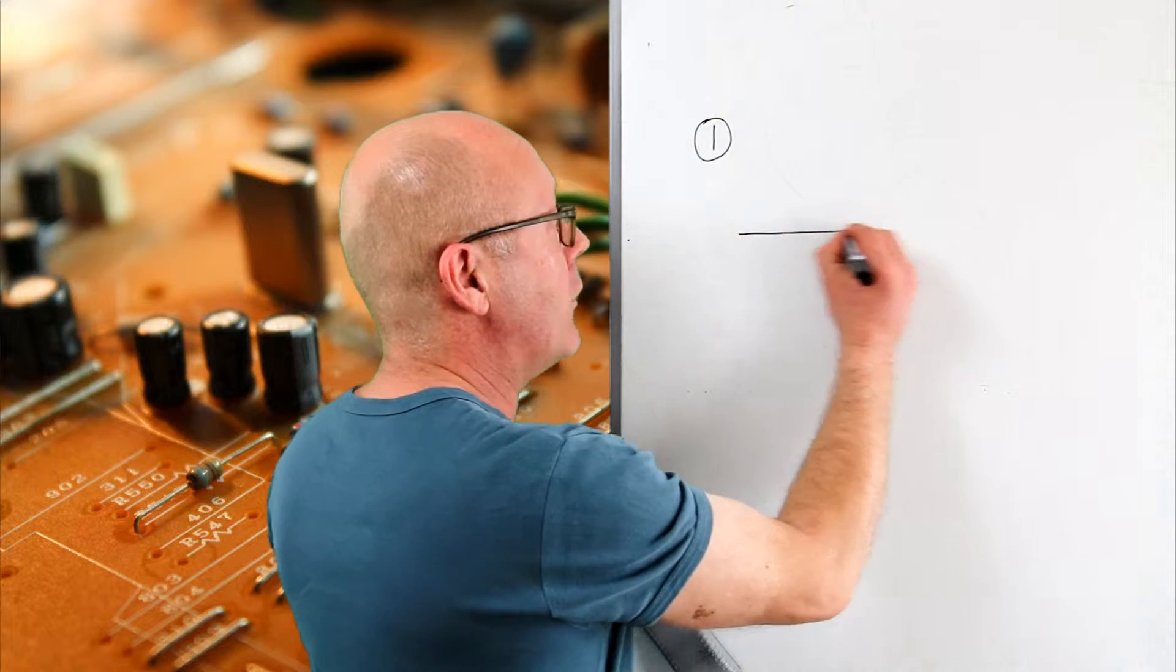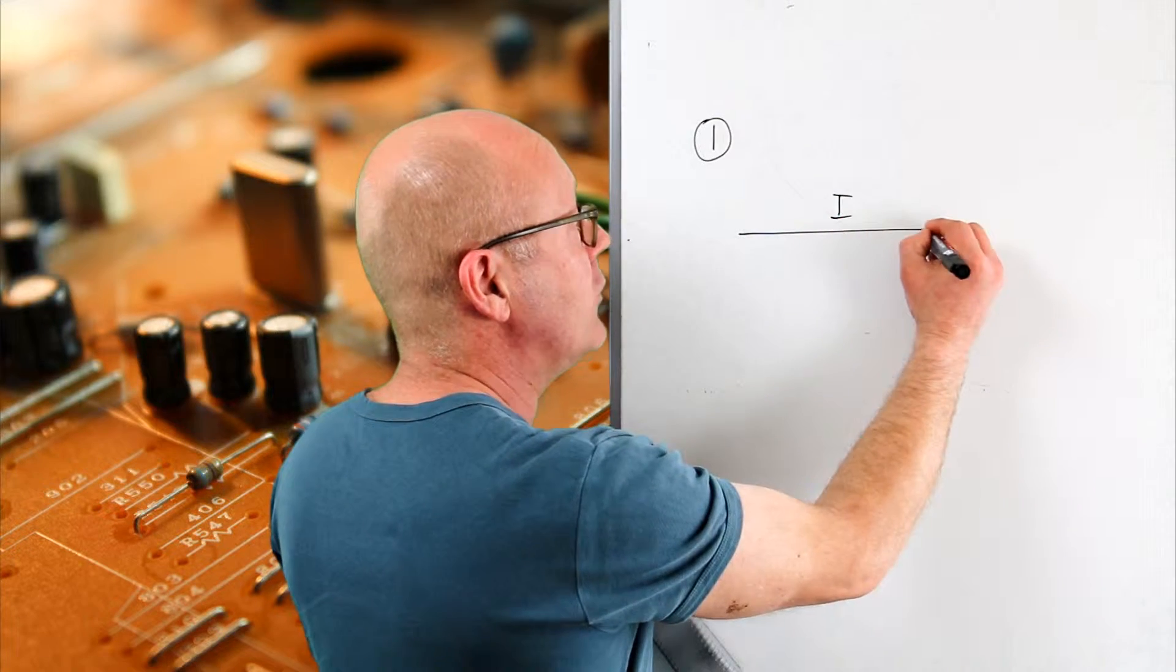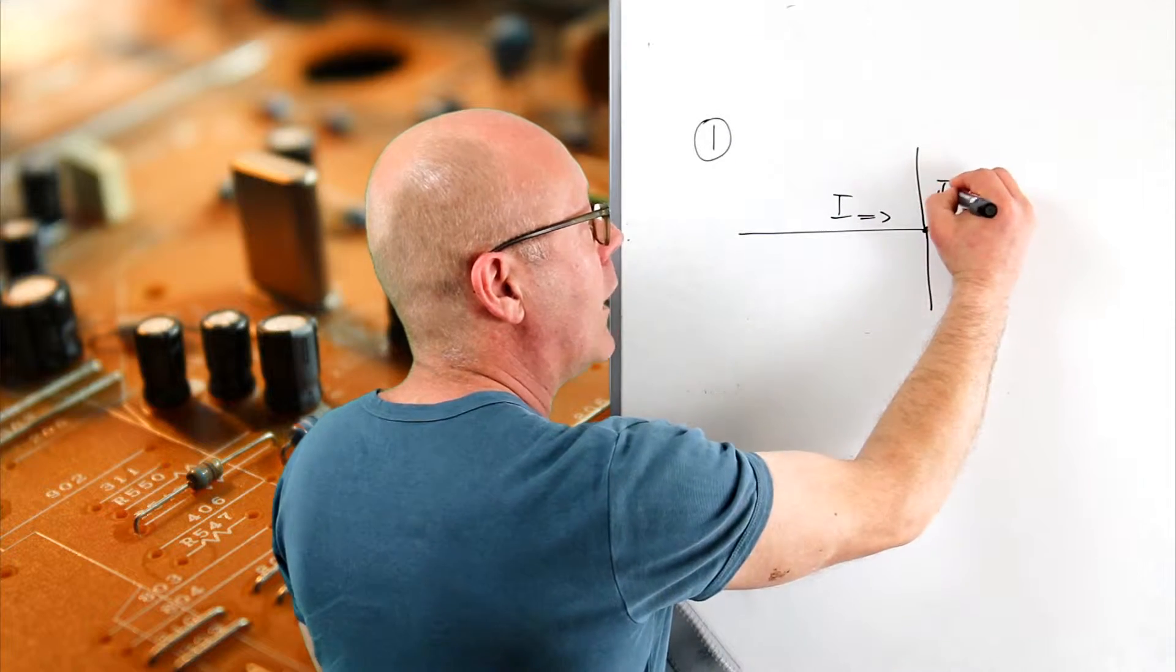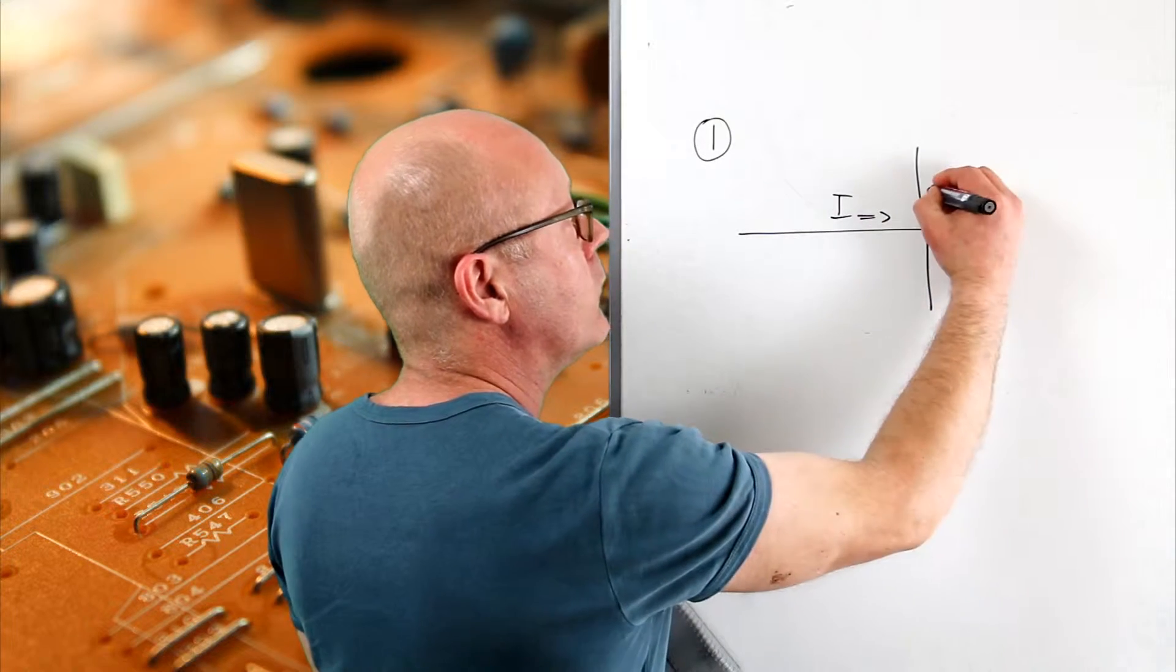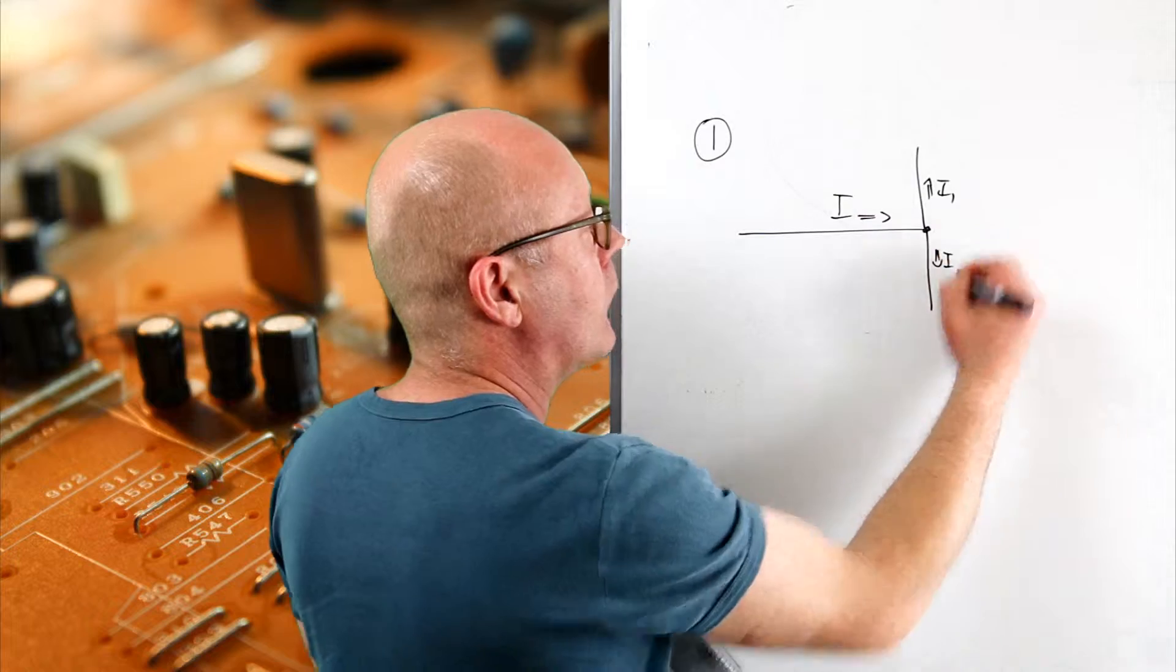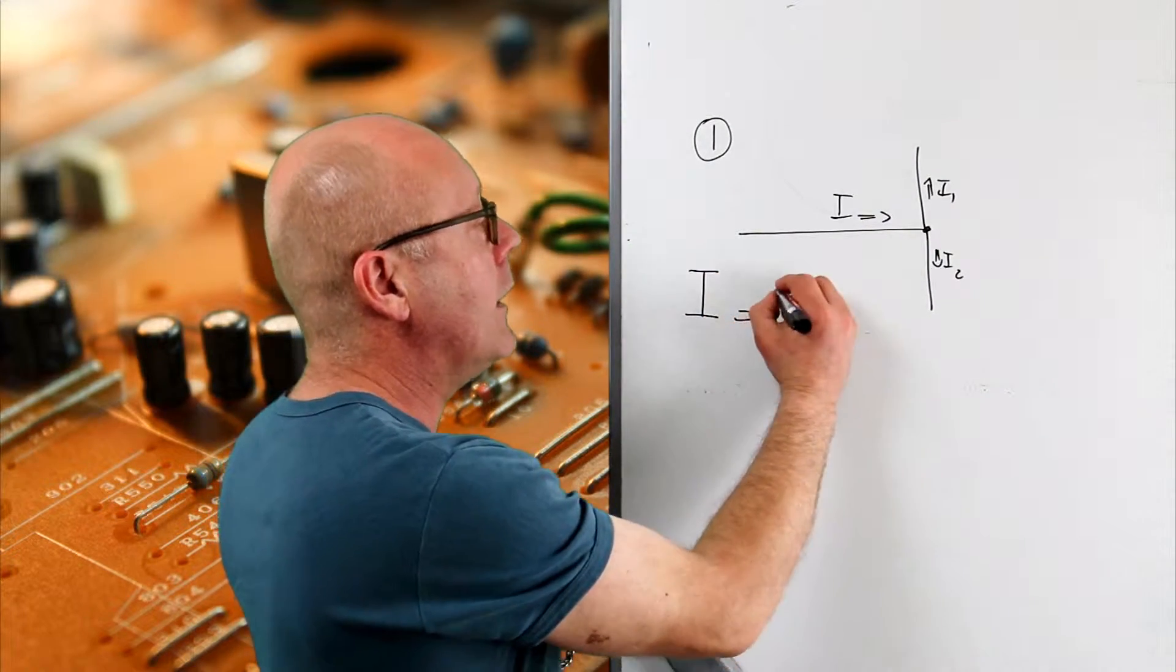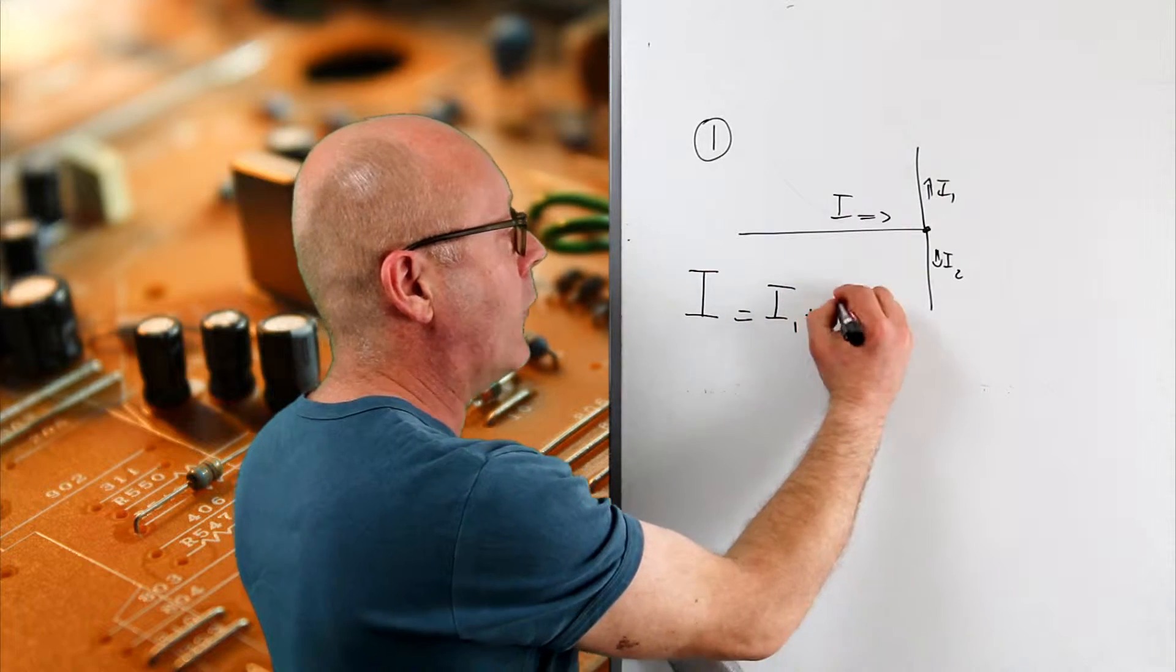It means that when you have a current going inside a junction, it splits into I1 and I2. The first law of Kirchhoff says that the sum of the currents going in equals the sum of the currents going out.